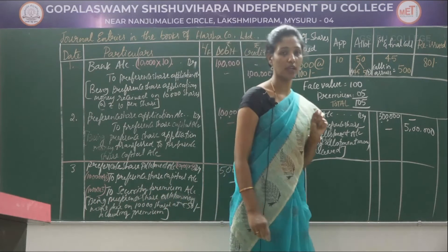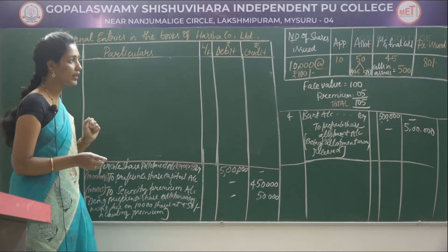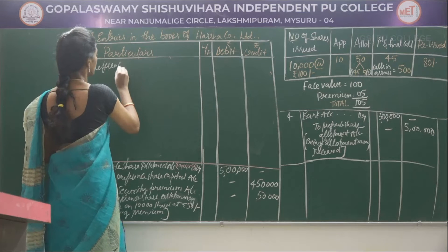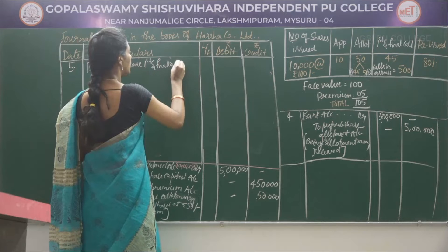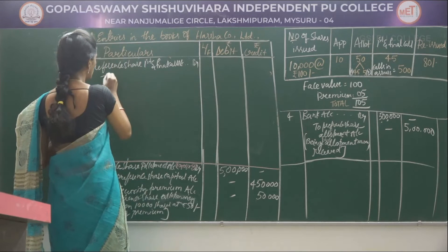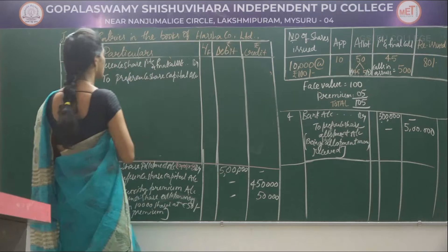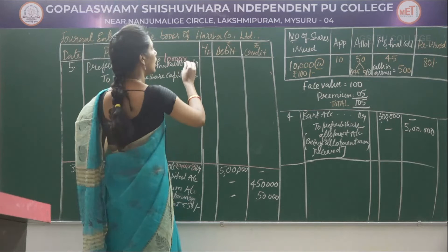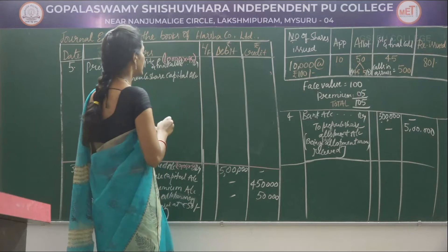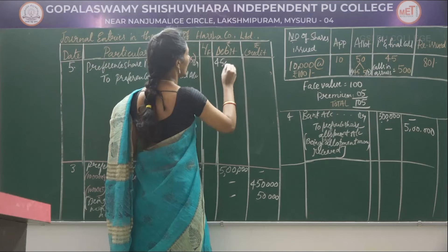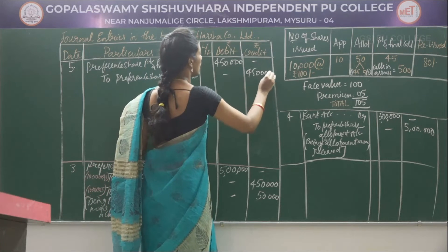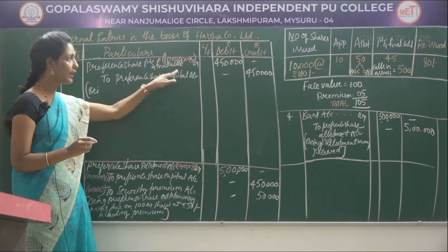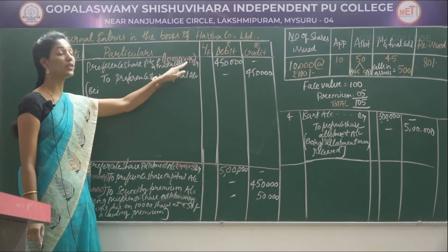The second stage is over and the next third stage is first and final call. The fifth journal entry relates to first and final call money due: Preference Share First and Final Call Account debited to Preference Share Capital Account. 10,000 shares into Rs 45 comes to Rs 4,50,000. Narration: Being preference share first and final call money due on 10,000 preference shares at Rs 45 per share.